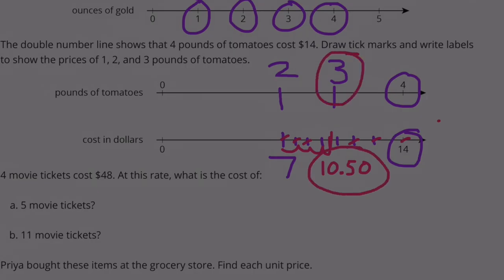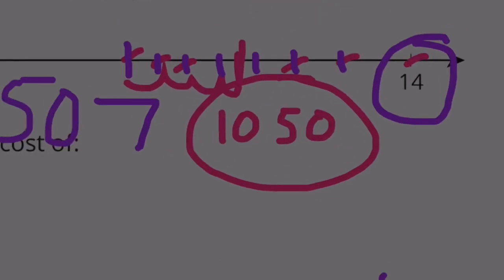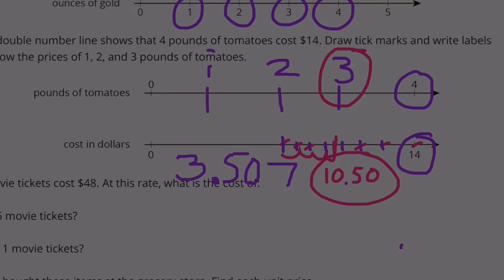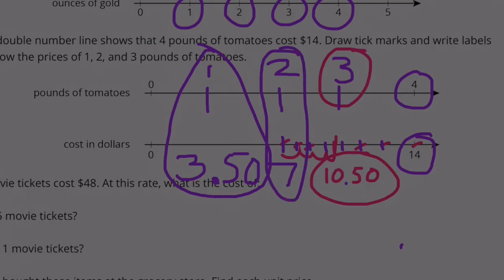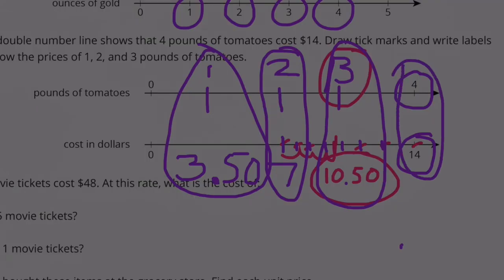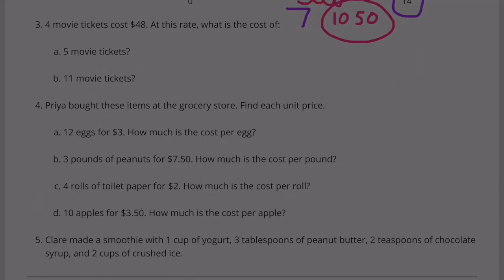Halfway between zero and two would be one pound, and halfway between zero and $7 would be $3.50. You need to put a decimal here for $10.50. So: one pound of tomatoes is $3.50, two pounds of tomatoes is $7.00, three pounds of tomatoes is $10.50, and four pounds of tomatoes is $14.00.